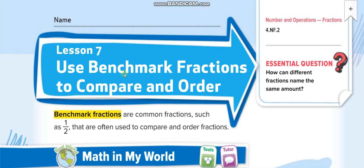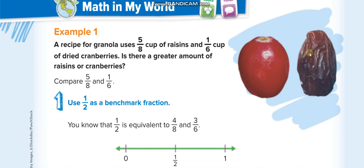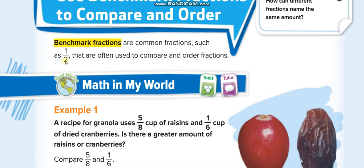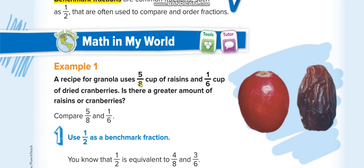Now in this lesson we will compare and order fractions using the benchmark fraction. What is a benchmark fraction? Like half — we will compare each fraction to see if it is equal to half, less than half, or greater than half. Let's take the first example: 5 over 8 and 1 over 6. Half means half of the denominator. For 8, half is 4, and we have 5 here — so 5 over 8 is more than half.